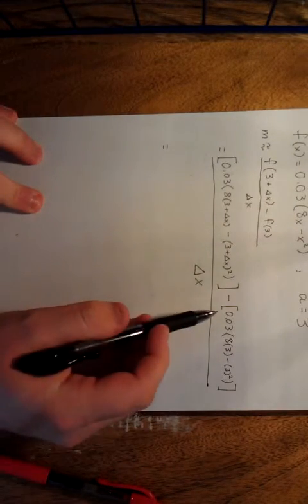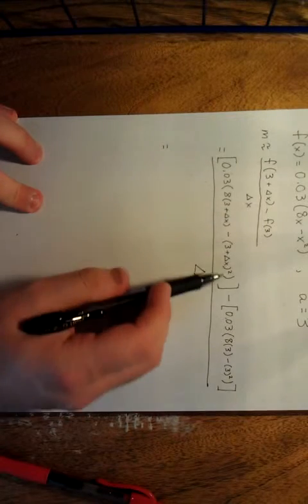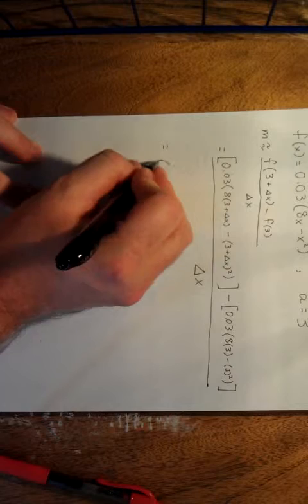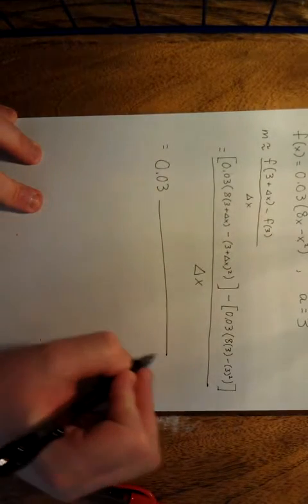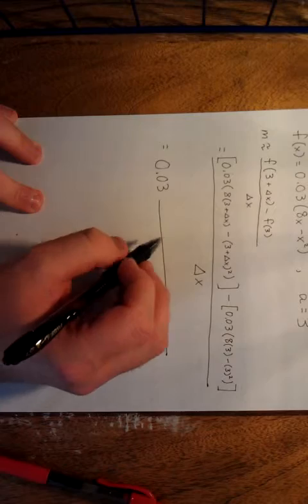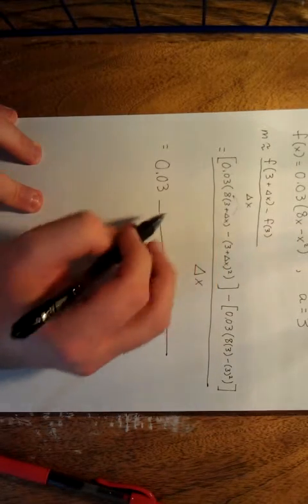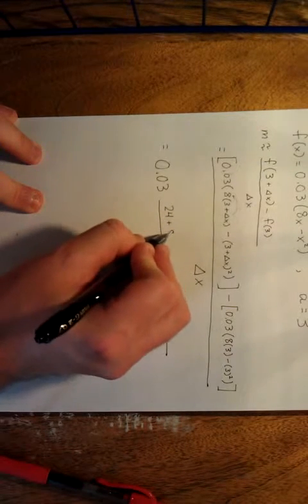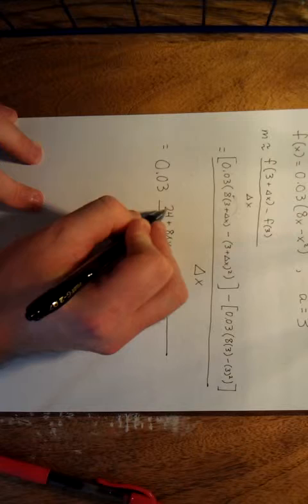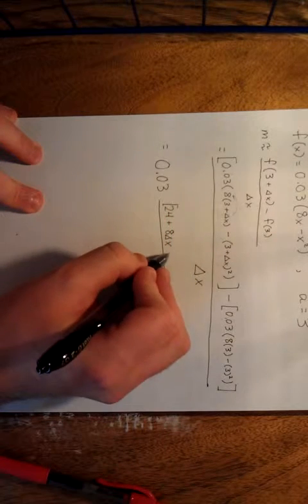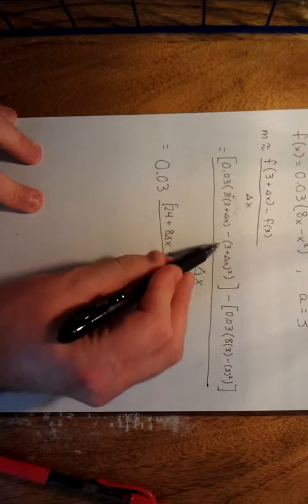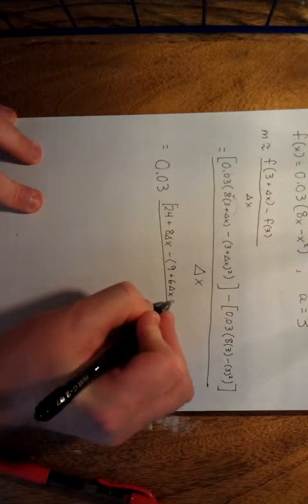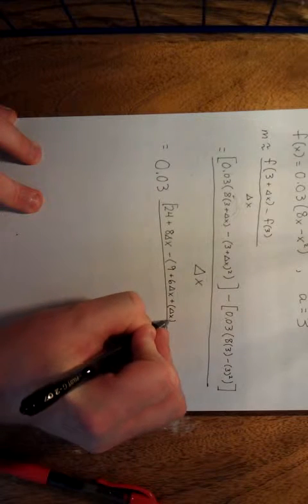First, both terms have a factor of 0.03, so I'll factor that out. Then I'll distribute the 8: 8 times 3 gives 24, plus 8 times delta x. Then we'll FOIL (3 + Δx)², giving 9 + 6Δx + Δx². For the second part, we have 8 times 3 = 24 minus 3² = 9. All of this is over delta x.